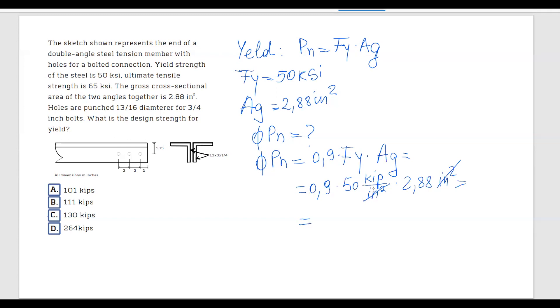If you do the math, you should get 129.6 kips. This gives us that the design strength for yield equals approximately 130 kips, and the correct answer is C.